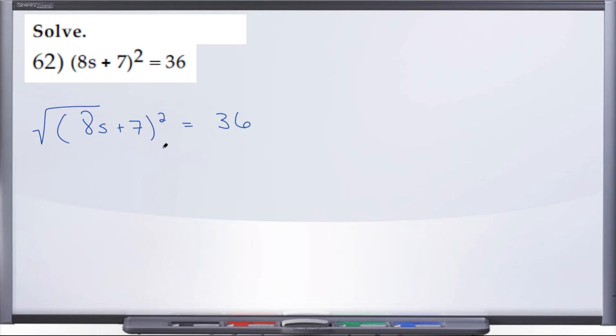In order to get rid of a square, we take the square root, but we can't just take the square root of one side, we have to take the square root of both sides. And when you create your own square root, you have to take the plus and minus, positive and negative, of that square root.